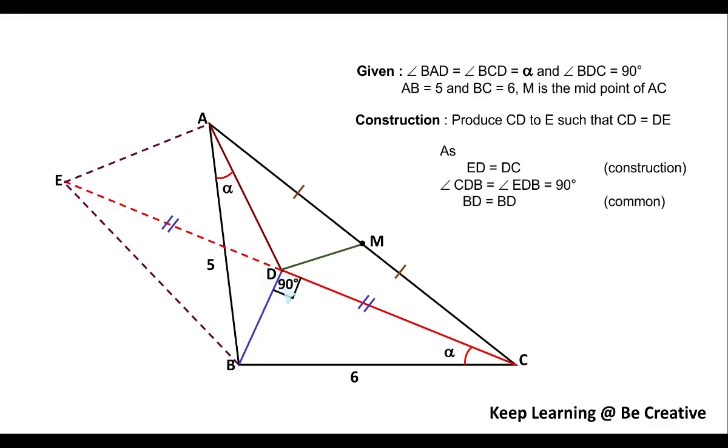Then we have BD in common. So what we can say is that triangle CDB will be congruent to triangle EDB. Now if the triangles are congruent, then we can say that EB will be equals to BC by CPCT, as this is in front of 90 degrees. So in front of this 90 degrees, this length EB will be 6. As well as we will have angle BCD equals angle BED, that will be alpha.